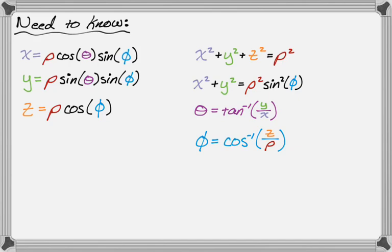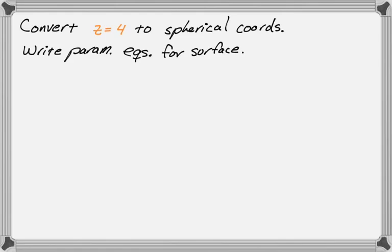Alright, let's take a look at an example. We want to convert z equals 4 to spherical coordinates and then we want to write parametric equations for the surface, which turns out to be kind of challenging. So let's see what we can do.